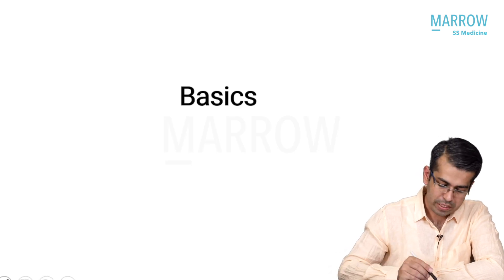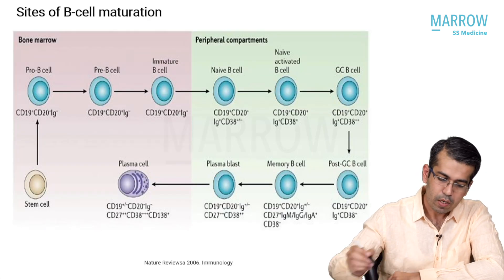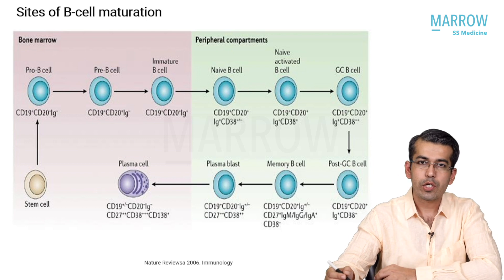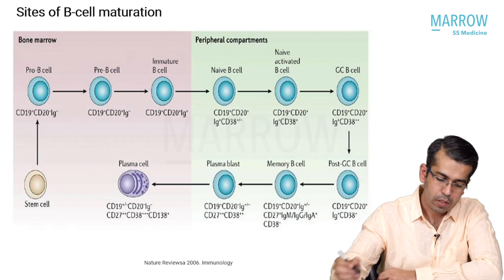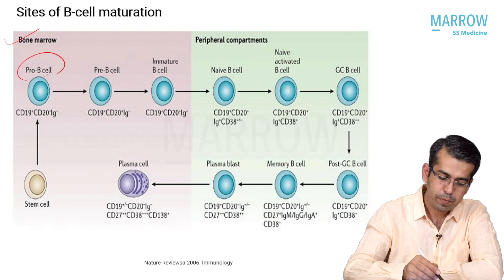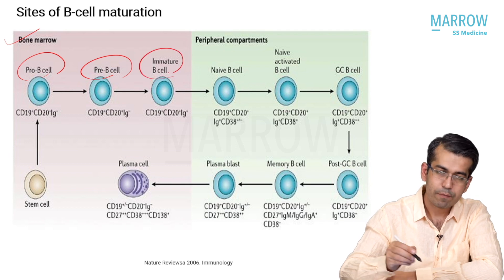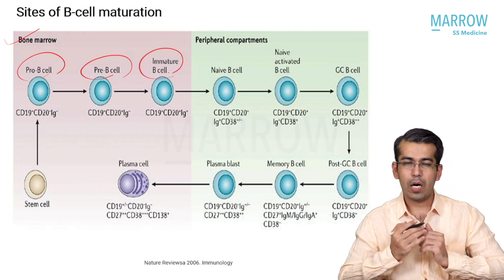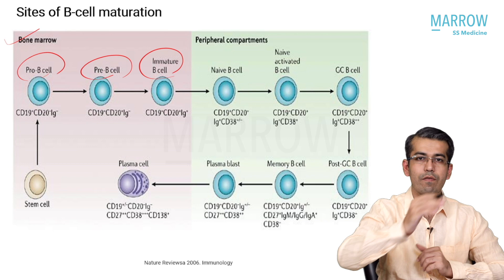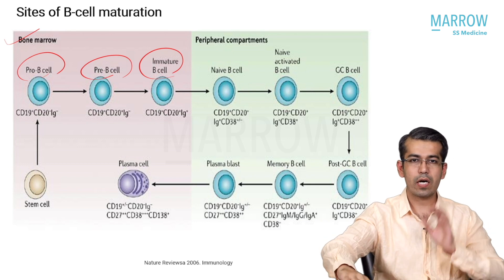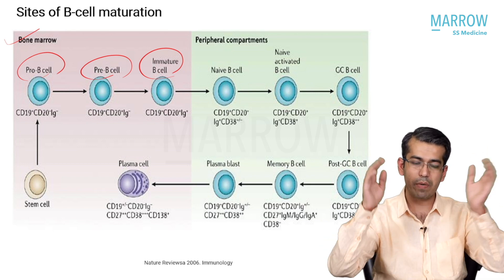First, let us understand the basics. Where does B cell maturation normally occur? In the bone marrow there is a pro-B cell which becomes a pre-B cell and then an immature B cell. These immature B cells exit the bone marrow and enter the peripheral lymphoid organs, which are the lymph nodes and the spleen.